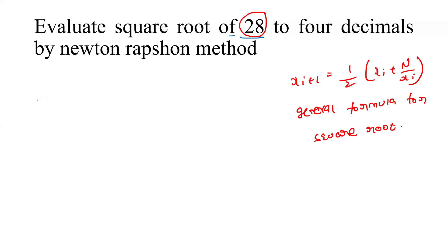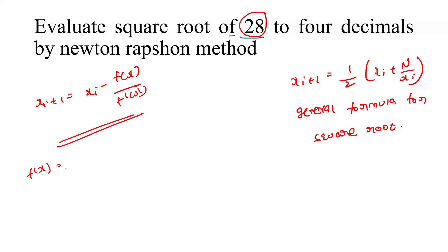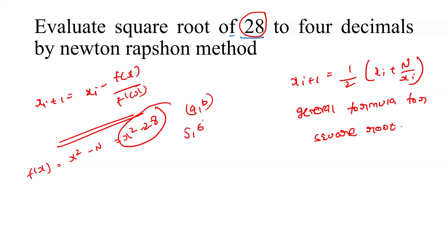Alternatively, you can use x_{i+1} = x_i - f(x)/f'(x). If you use this formula, you take f(x) = x² - n, which is x² - 28. For this approach, you need to find the interval [a, b]. The interval lies between 5 and 6, so the initial approximation x₀ must be taken between 5 and 6.